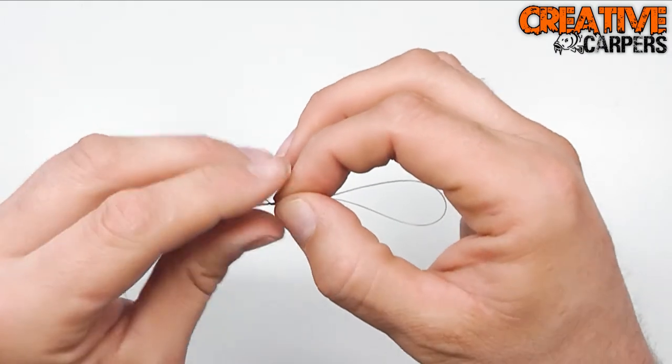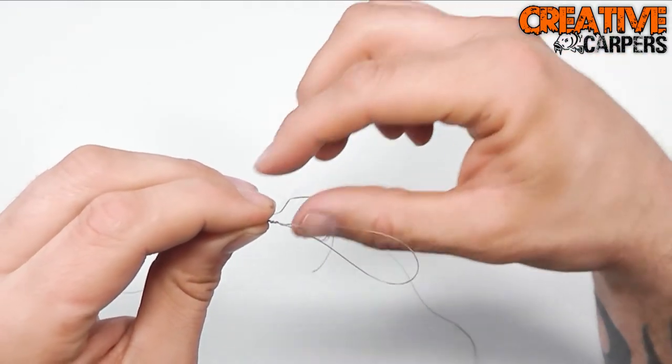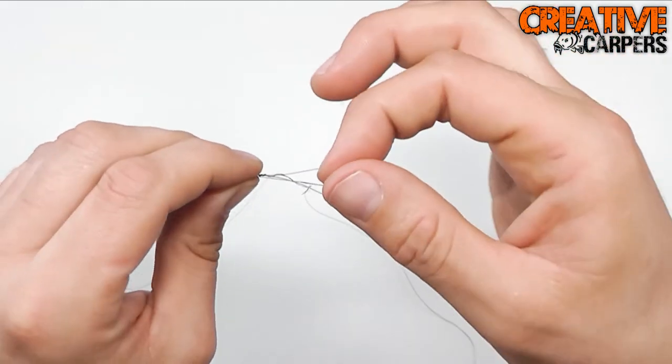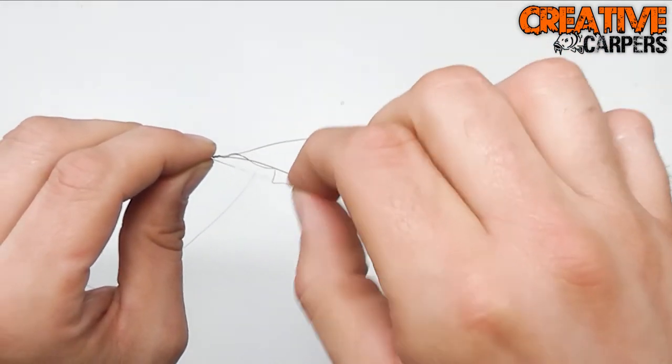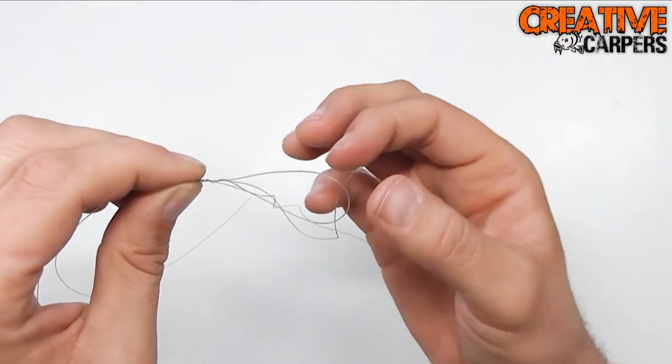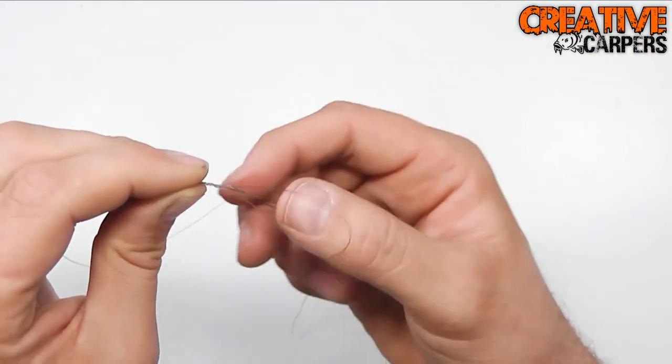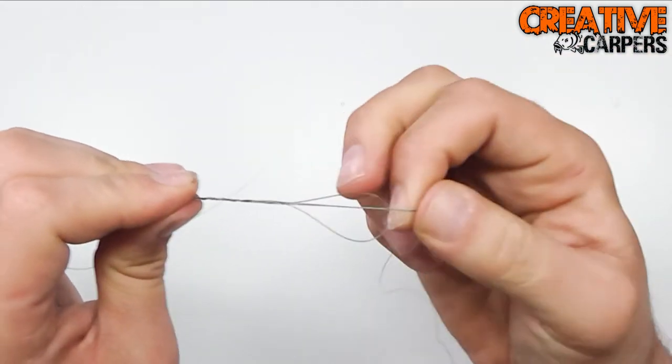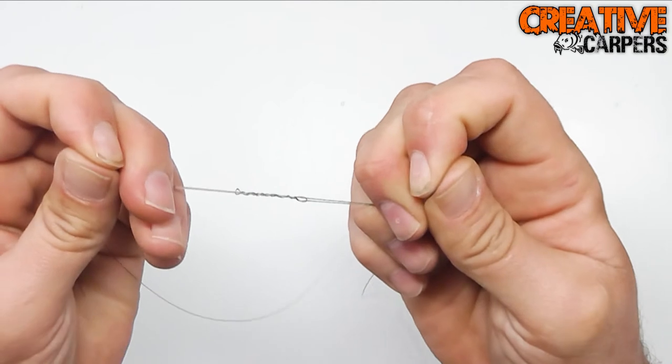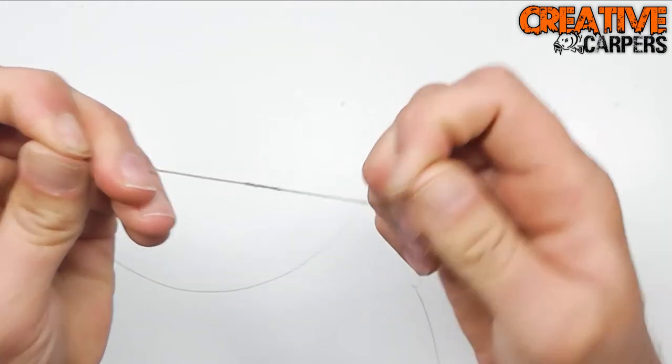Okay, and at this point, you just want to make sure that the tag end goes back through that loop. Let's get my hand out of the way. Tag end goes back through that loop exactly the same way as it entered, and then you just pull down the two tag ends that are left, like so.